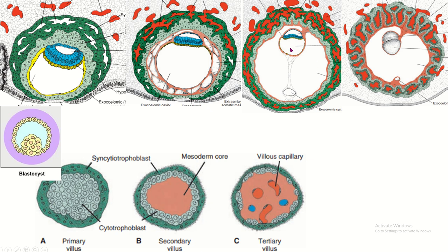The secondary yolk sac cavity, amniotic cavity, and chorionic cavity are now present. The chorion is formed by the somatic layer of extra-embryonic mesoderm together with the cytotrophoblast and syncytiotrophoblast. This combined structure is known as the chorion.